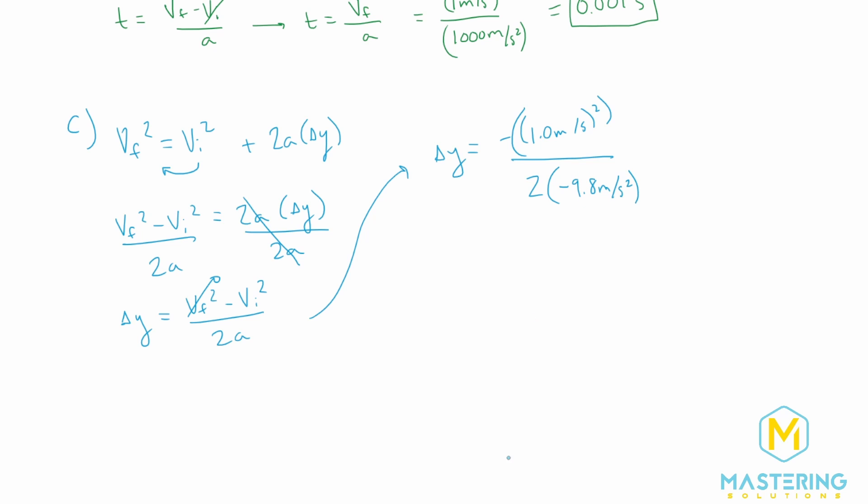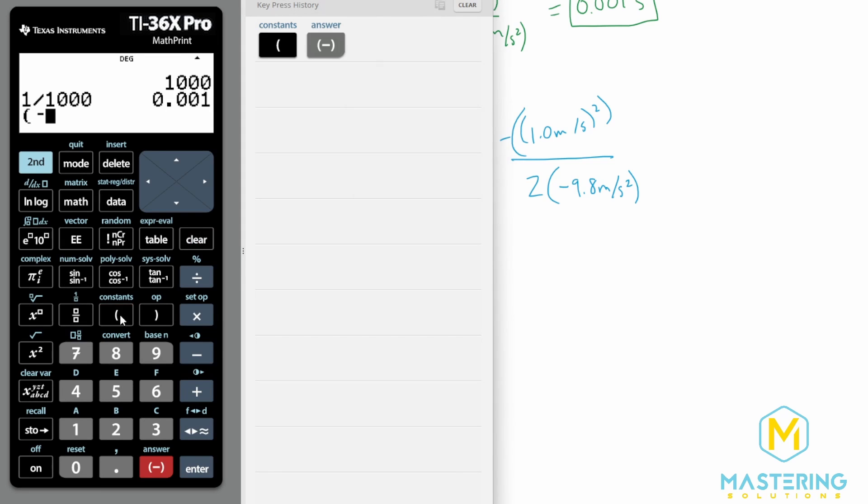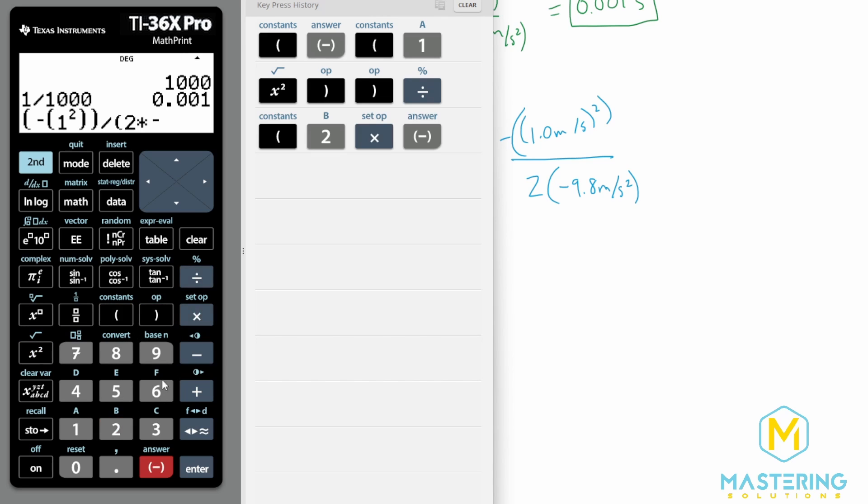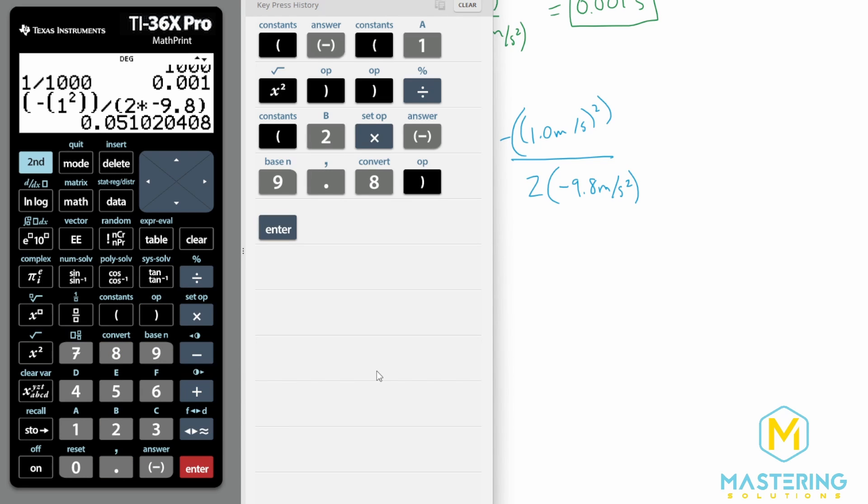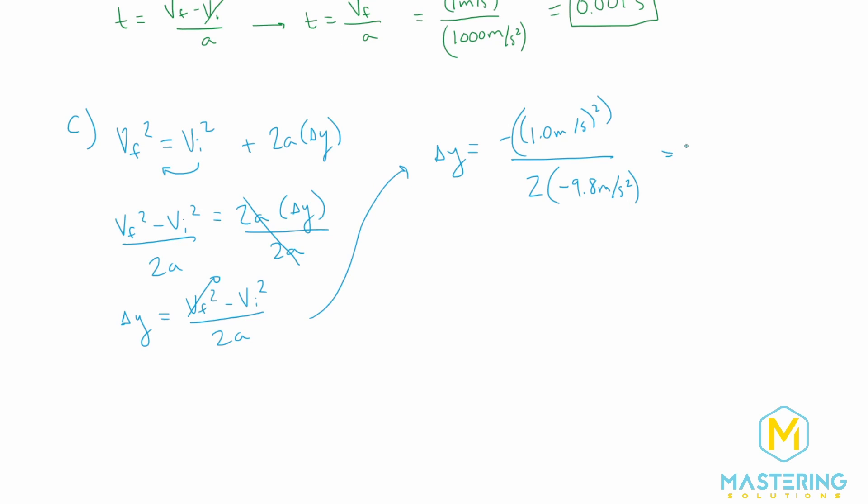So when we plug that in, we have negative 1 squared, and then we'll divide that by 2 times the acceleration of negative 9.8 meters per second squared, which will give us a delta y of 0.051 meters.